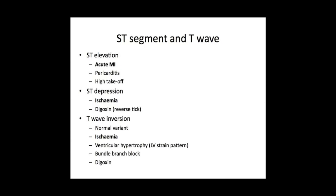Having looked at the intervals and the QRS complex, you then move on to look at the ST segments and the T waves. Considering the ST segments, they can either be normal, elevated, or depressed. ST elevation can be a very significant finding in patients who present with acute coronary syndrome, because that could indicate an acute MI. It's very important to remember that if you see a patient with ST elevation on their ECG, you must always consider an MI — the most important thing to consider.